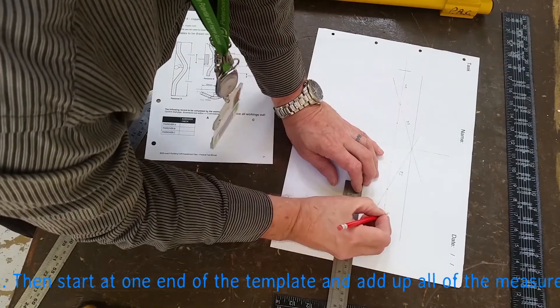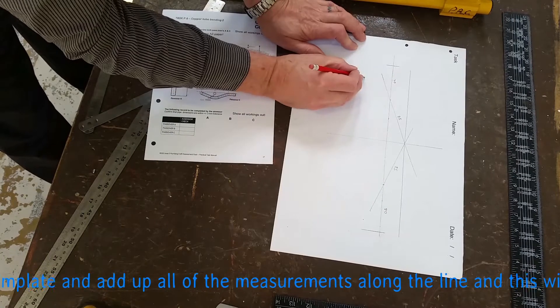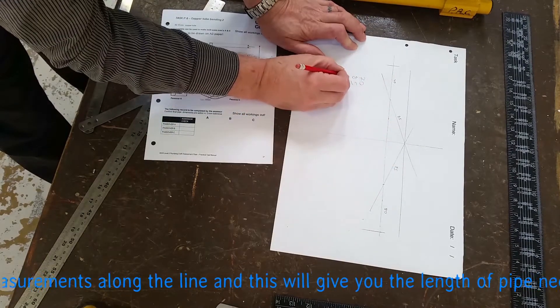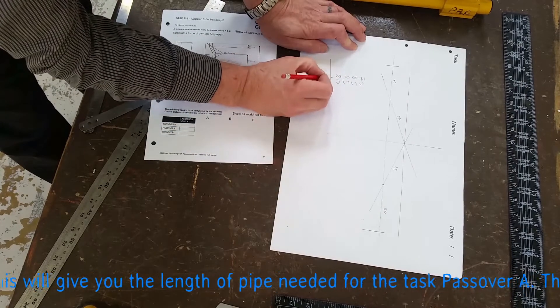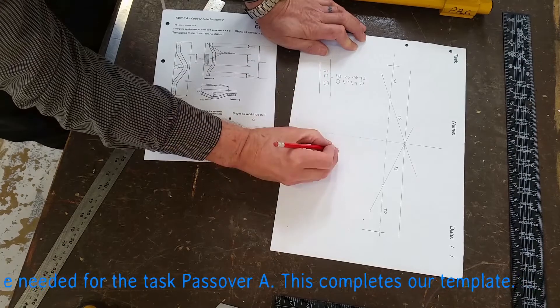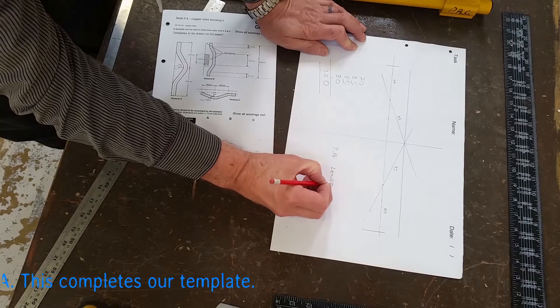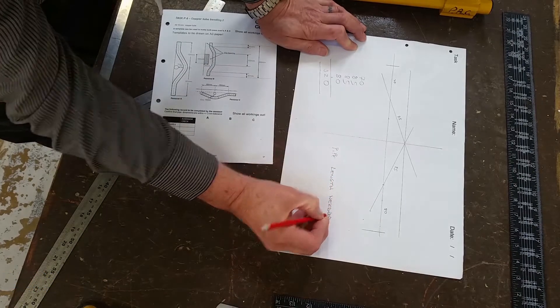Put them all up, start from the left or the right, up to you, write them all down, add them up. You must show all your working out, so even if you're doing it in your phone, in your head, wherever, you've got to write it down on the paper. City & Guilds want to show everything that you've done, to prove you haven't just copied it off somebody else. In this case it's 70-85-85-80, which is 320, so the length of the pipe we need for this task is 320mm.